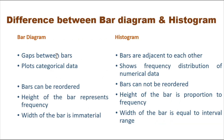Bar diagrams and histograms look very similar, so what is the difference? In a bar diagram there is a gap between bars; in a histogram bars are adjacent. Bar diagrams are for categorical data; histograms are for numerical data. In bar diagrams bars can be reordered — for example, male first then female — but in histograms bars follow a fixed order. The height of a bar in a bar diagram represents frequency directly, while in a histogram height is proportional to frequency. Also, bar width is immaterial in bar diagrams, but in histograms the width equals the interval range.